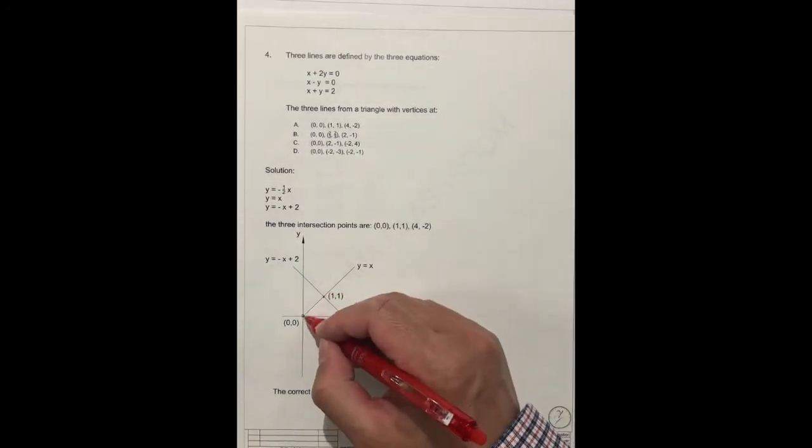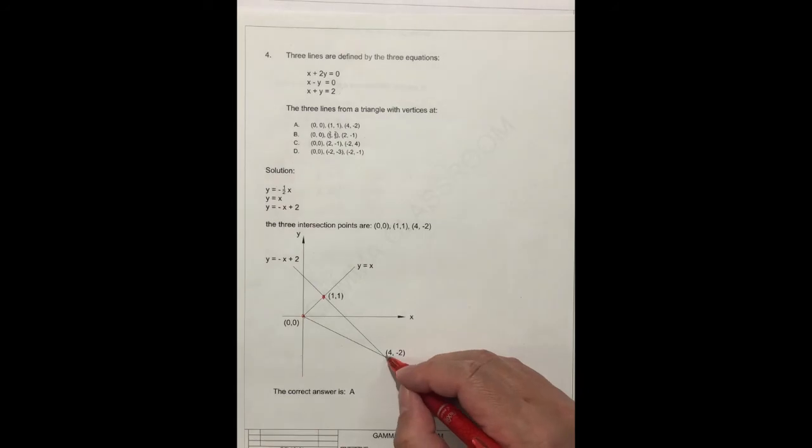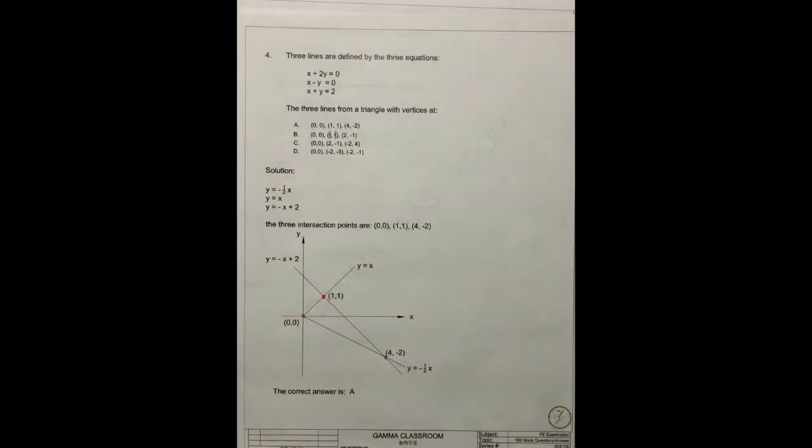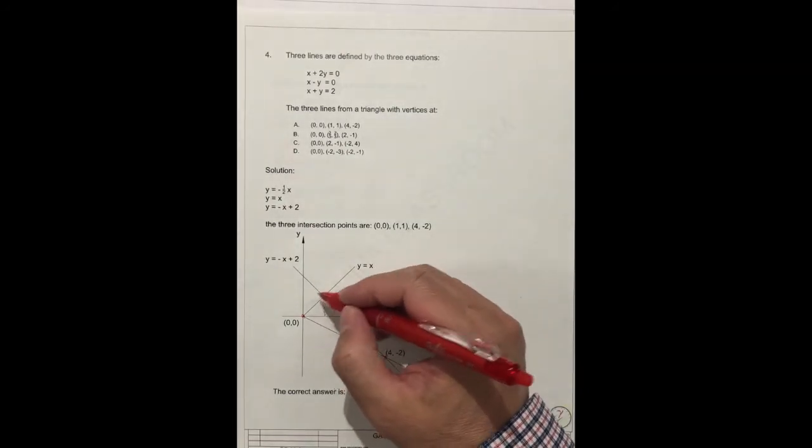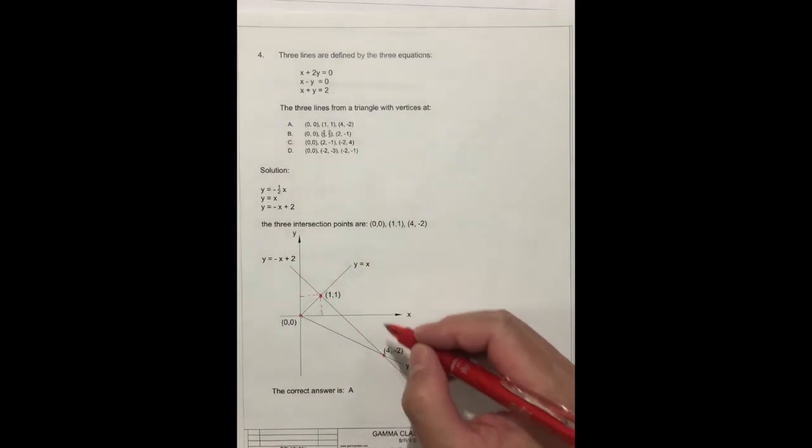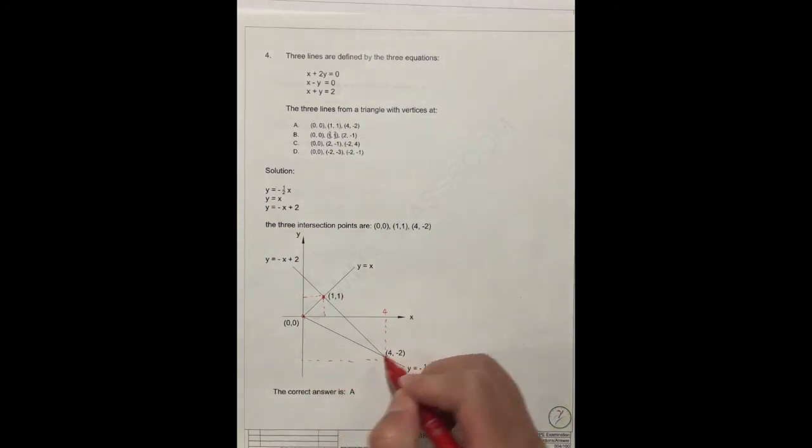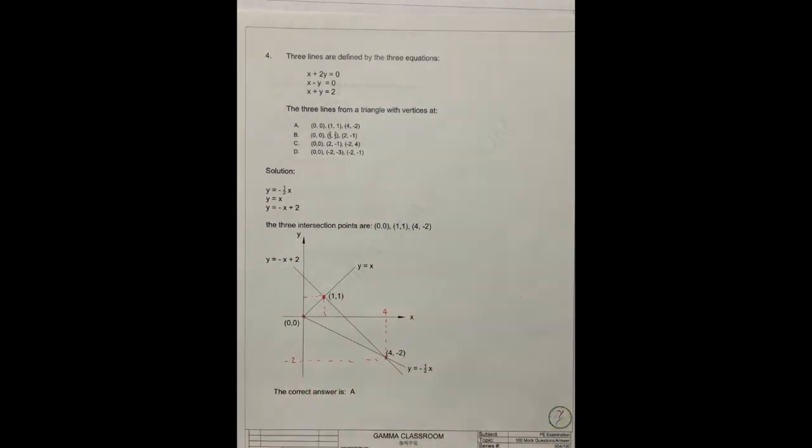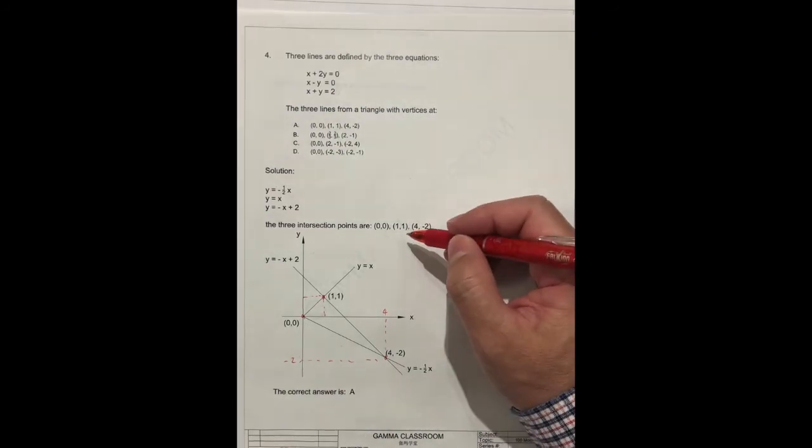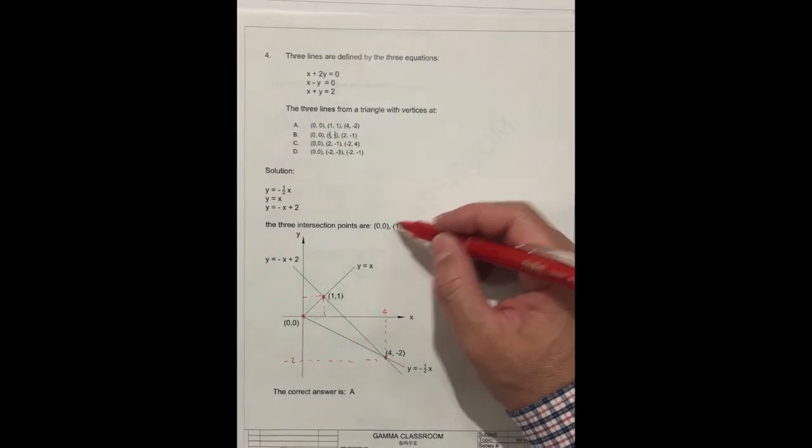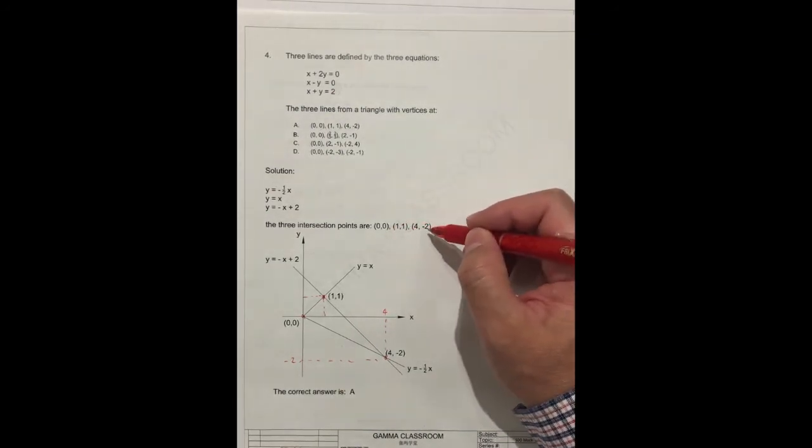Or you can draw a line on the plane, so you can find the point. 1, this is 1, 2, 3. This is 1, 1. You see, this is 1, 1. And this is 4, 4, minus 2. So you get the same answer: 0, 0; 1, 1; 4 and minus 2. And you get the answer is A.